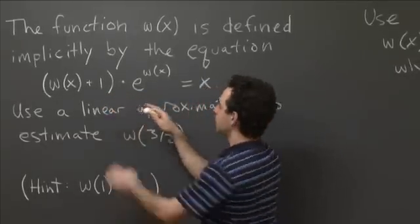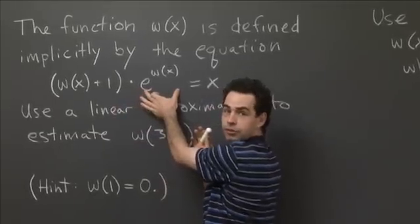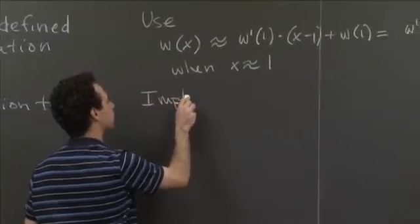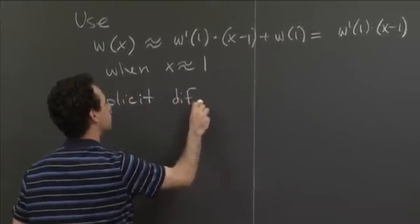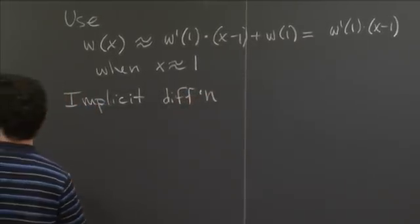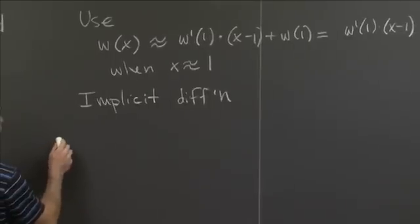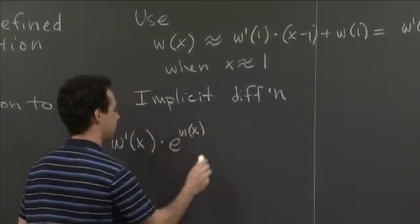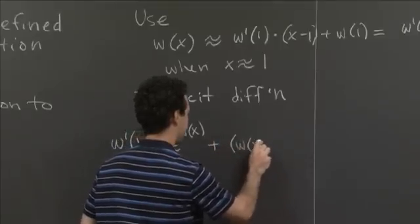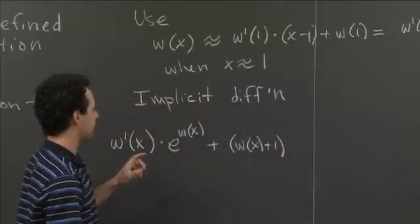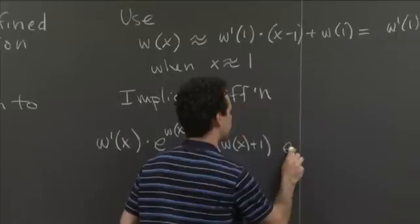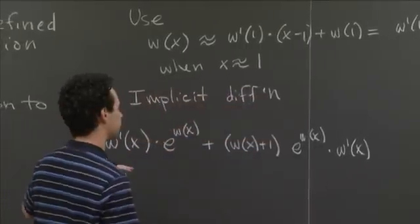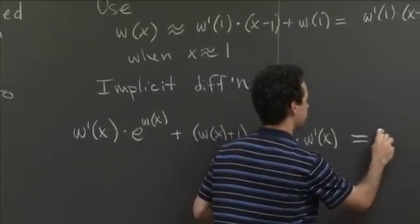The right-hand side differentiates to 1. On the left-hand side, we have a product and a chain rule situation with e^(w(x)). From the product rule: the derivative of the first part w'(x) times the second part e^(w(x)), plus the first part (w(x) + 1) times the derivative of e^(w(x)), which gives e^(w(x)) · w'(x) by the chain rule. So the left-hand side differentiated equals 1.